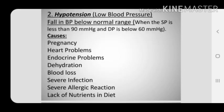Hypotension, also known as low blood pressure, is a fall in blood pressure below the normal range. The main causes are pregnancy, heart problems, endocrine problems, dehydration, blood loss, severe infection, depression, allergies, or lack of nutrients in the diet.